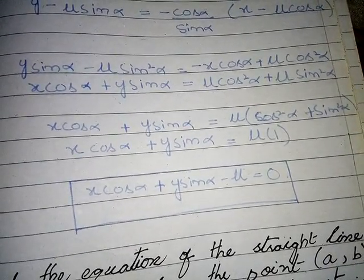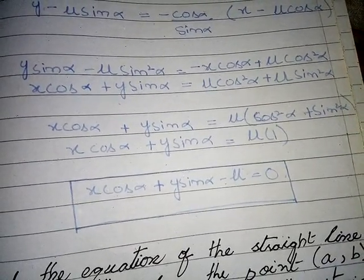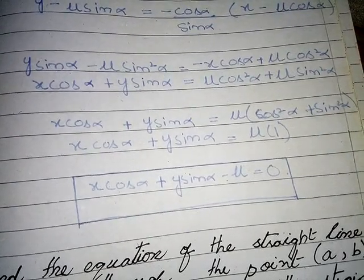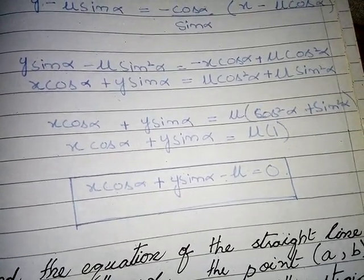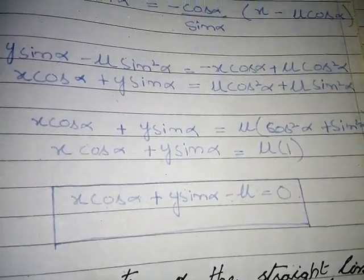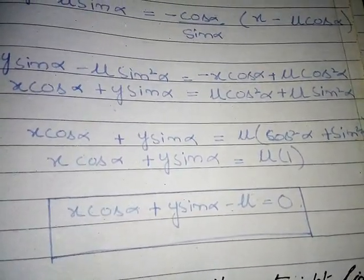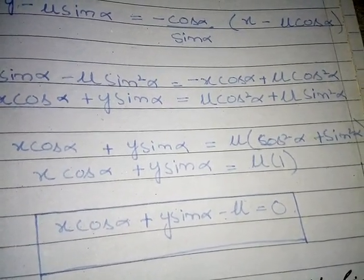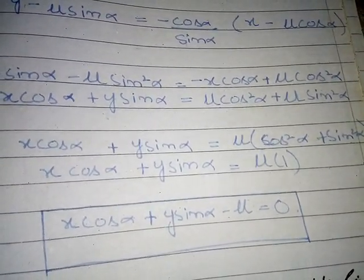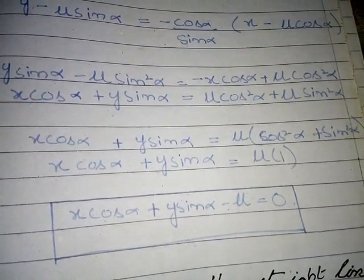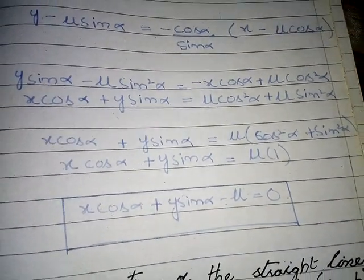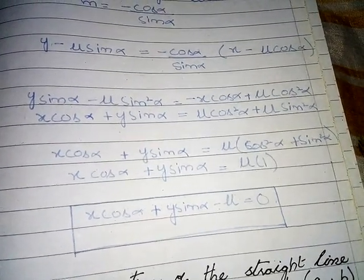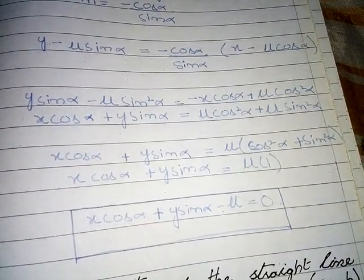This is the equation of the straight line which makes an angle of (90° + α) with the x-axis and passes through the given point. Thank you for watching the video. Please subscribe to our channel and like our videos. Thank you so much, take care of yourself.